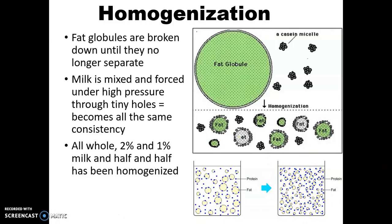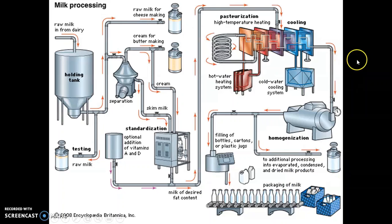So pretty much any milk that you buy at the store has been homogenized except for skim milk. And of course, the reason that skim milk is not homogenized is it has no fat in it. So you take the fat off first, then you don't have to break down the fat globules through that homogenization process.